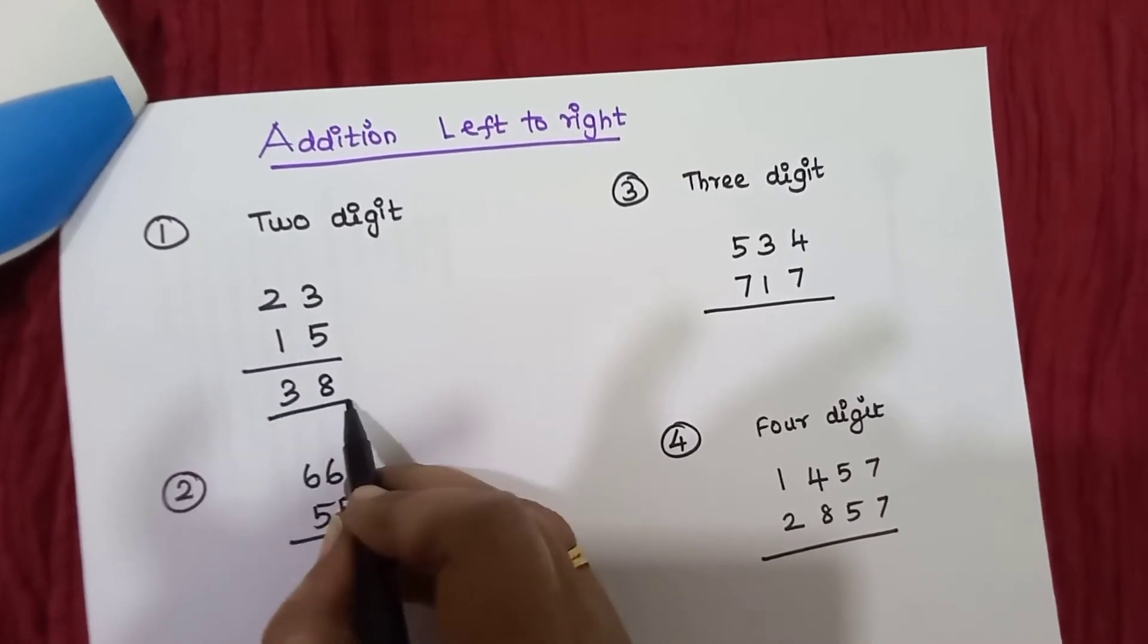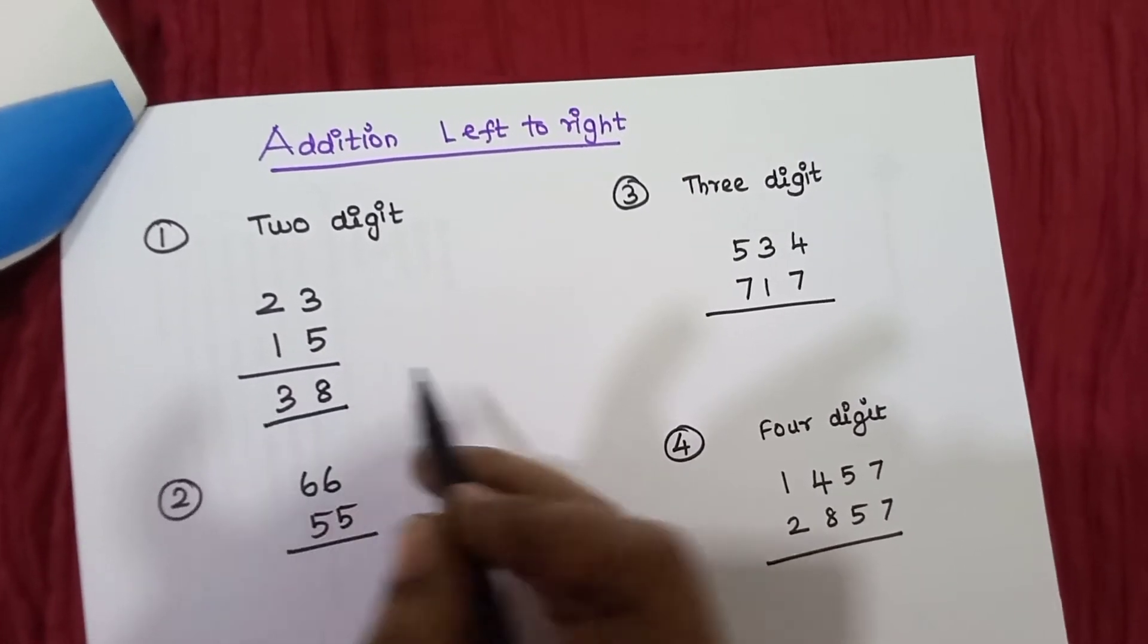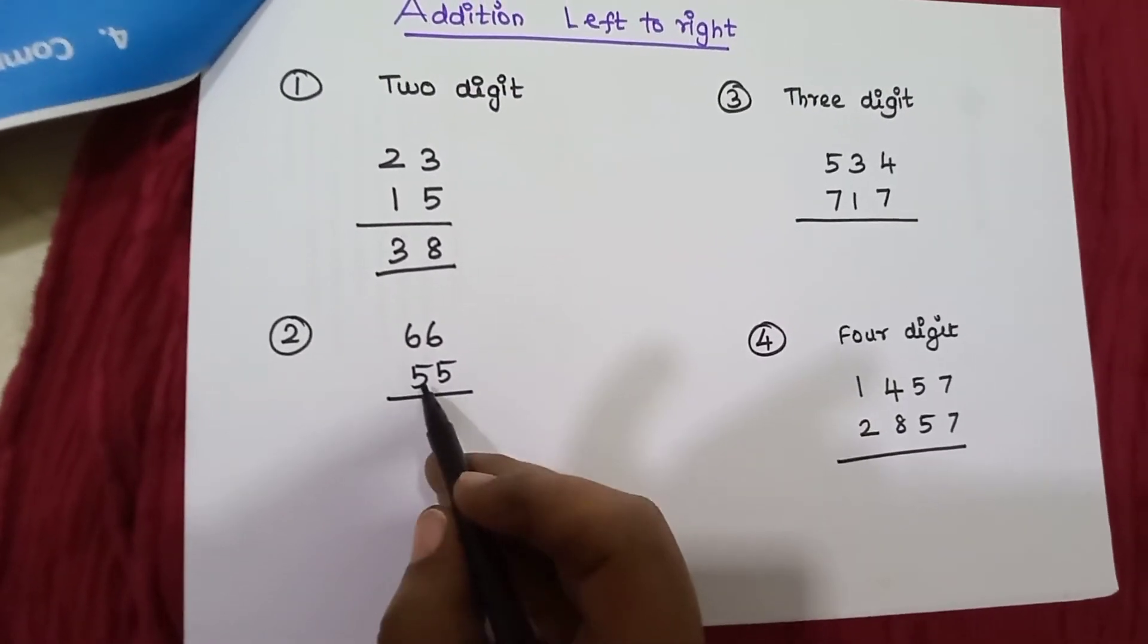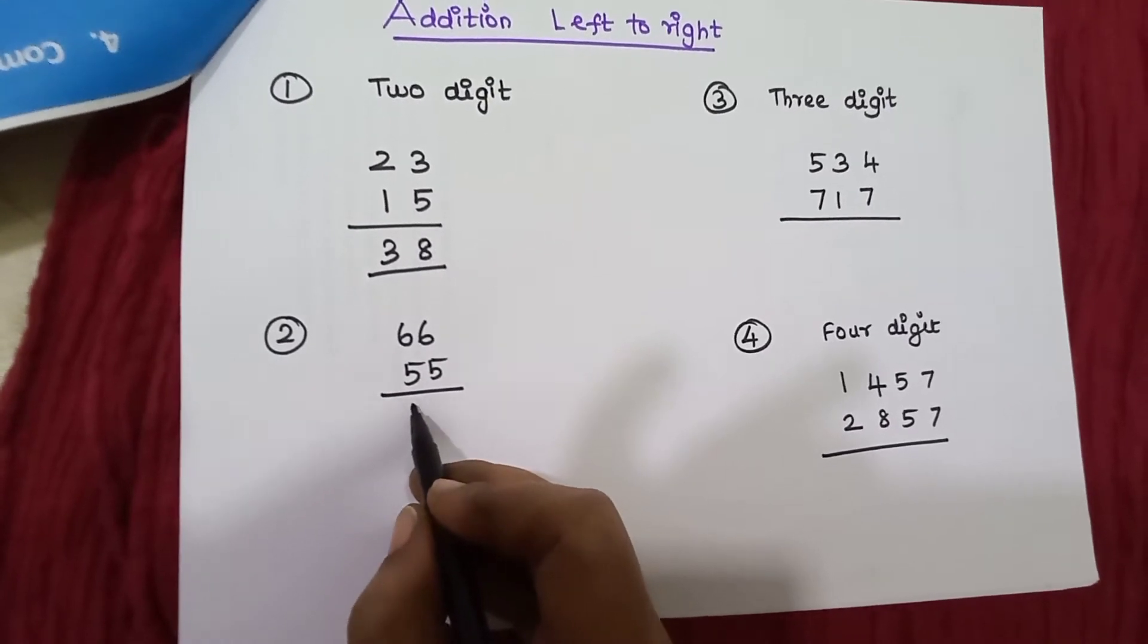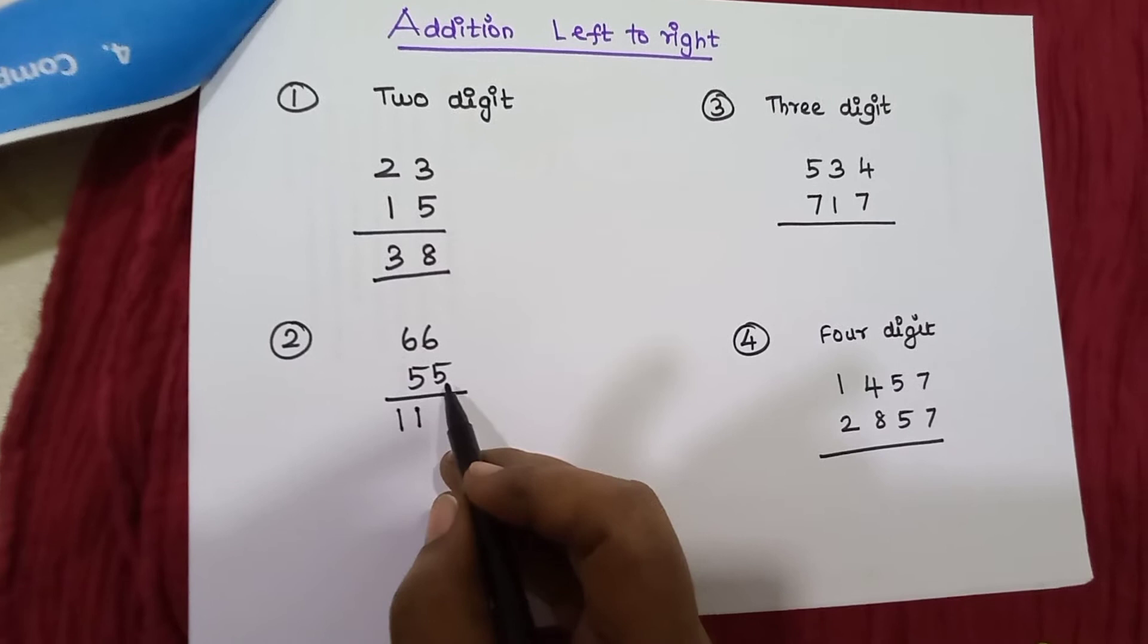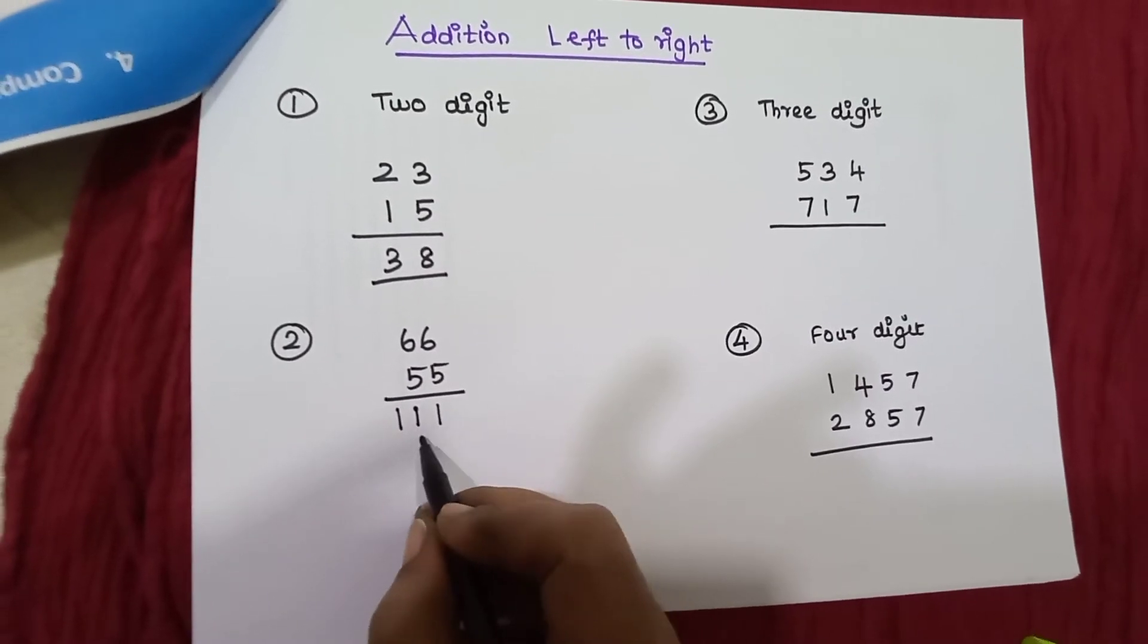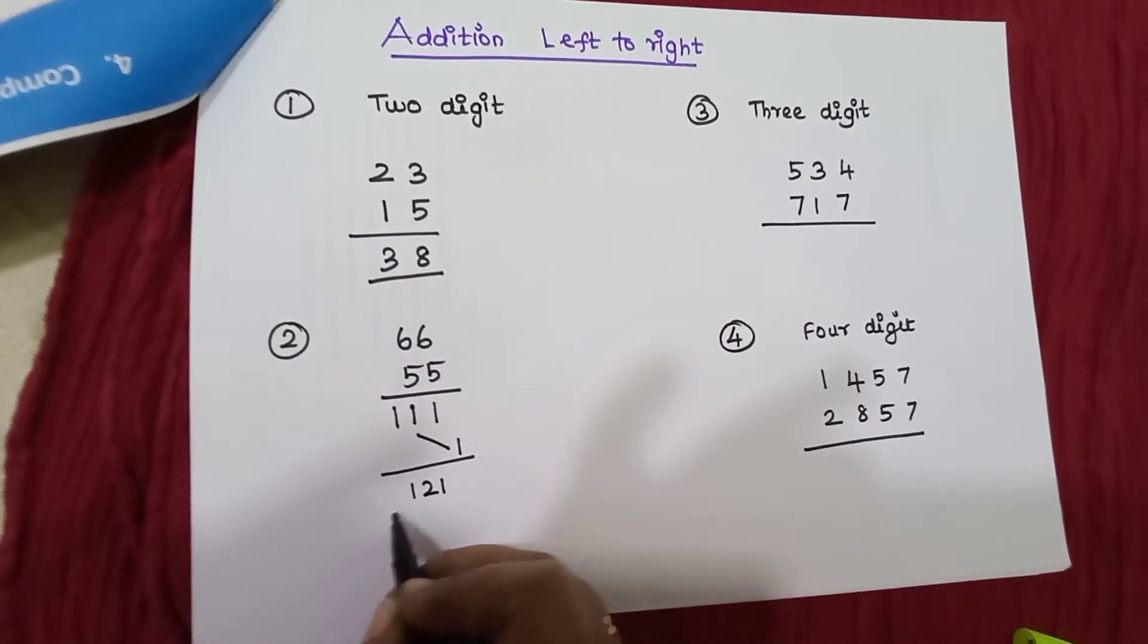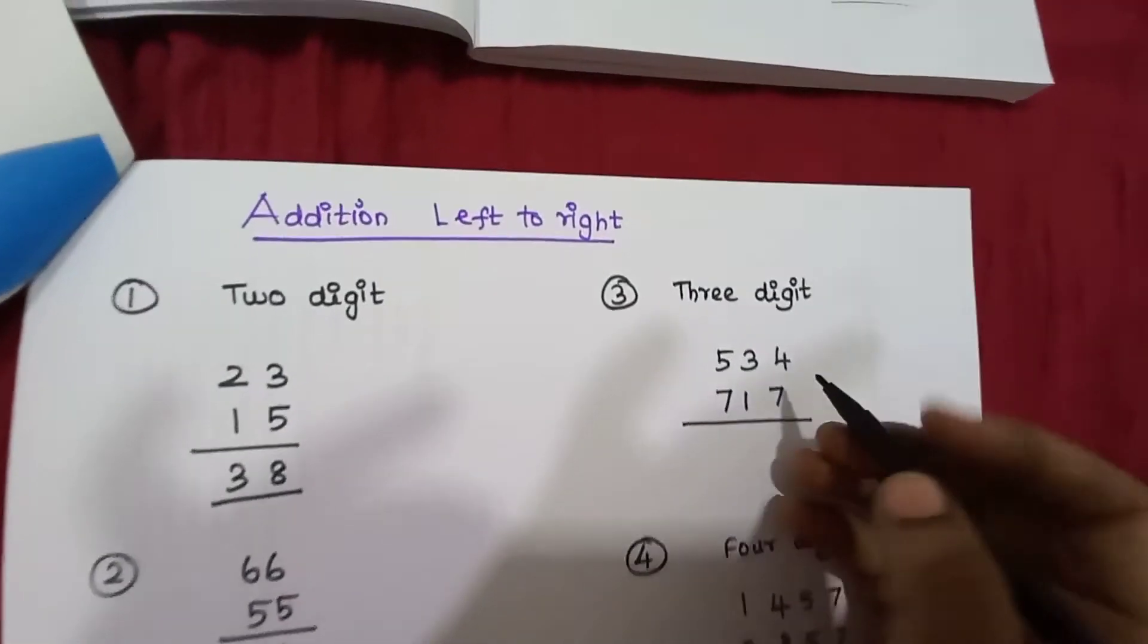So carry it. Next is 6 plus 5, 11. So 6 plus 5, 11, so carry this, add 1, 121.